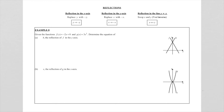Let's look at this first problem. Given the functions f(x) equal to minus 2x plus 8 and g(x) equal to 3x squared — a linear function and a parabola. They ask us to find h, and h is the reflection of f in the y-axis.